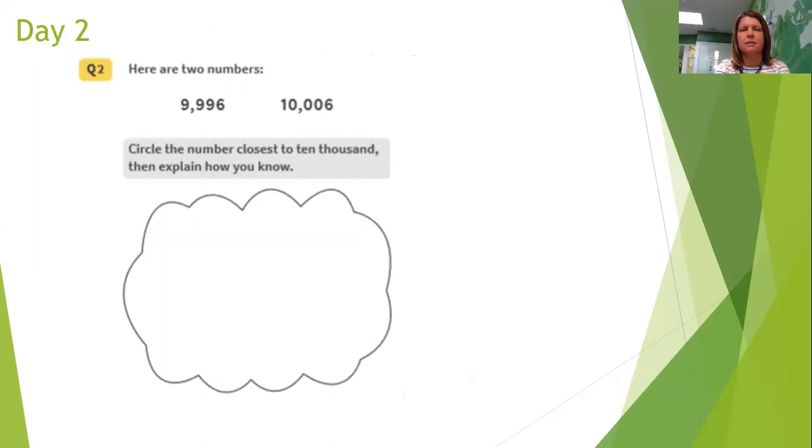With questions like this, it is always really tempting to think 10,000, I can see 10,000. So it must be the answer on the right, 10,006. But this is a tricky one, not a tricky one, but one that might catch you out. So I'm going to draw a number line to explain it.